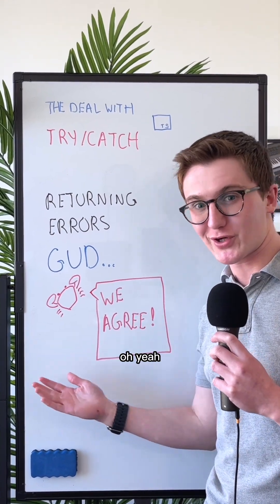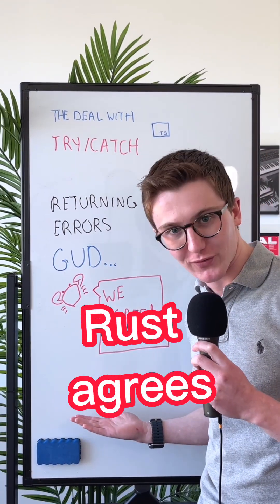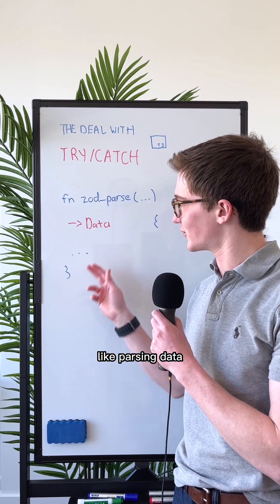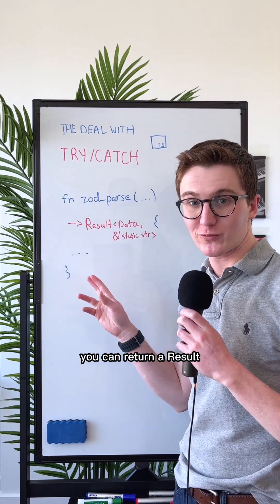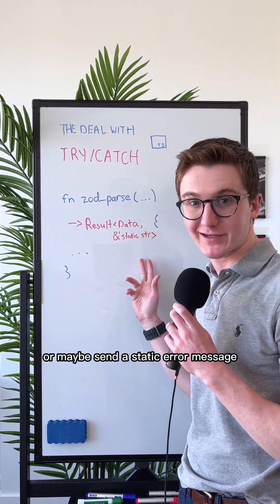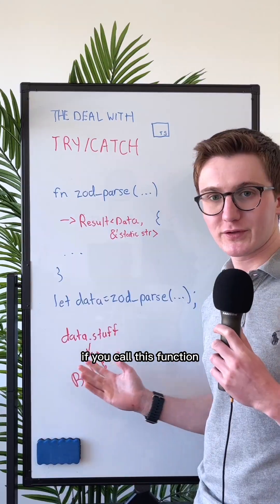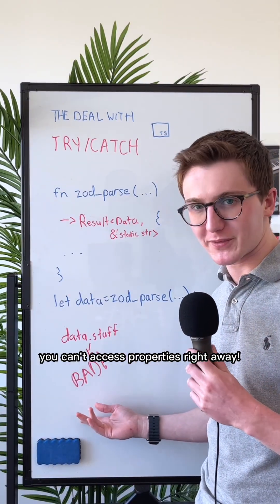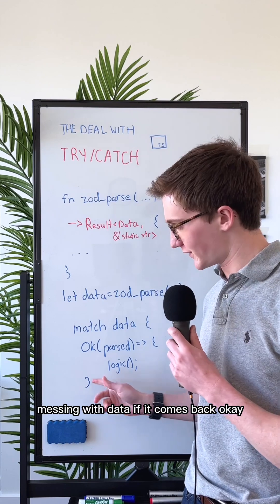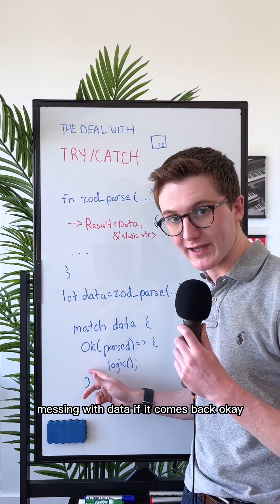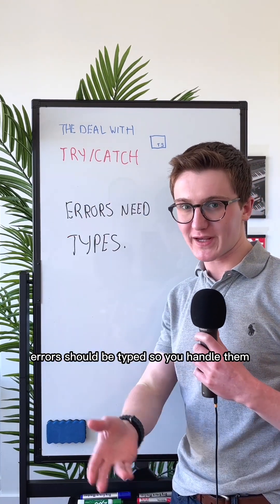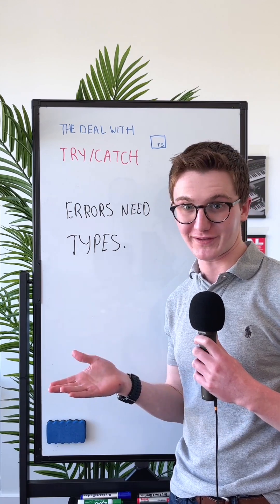If only that were baked into the language — well, Rust agrees. If you don't know something is always going to be successful, like parsing data, you can return a Result to either return successfully or return a typed error message. If you call this function, you can't access properties right away. Instead, you pattern match — handling data if it comes back okay and taking errors down a different path. Errors should be typed so you handle them, and Rust did it perfectly.